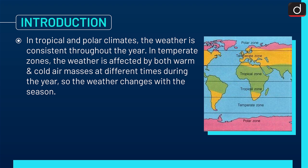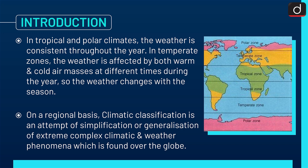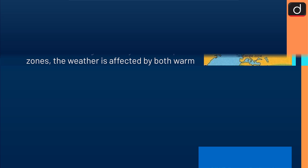On a regional basis, climatic classification is an attempt of simplification or generalization of extreme complex climatic and weather phenomena which is found over the globe. Now let's discuss about different zones of climate all over the world.